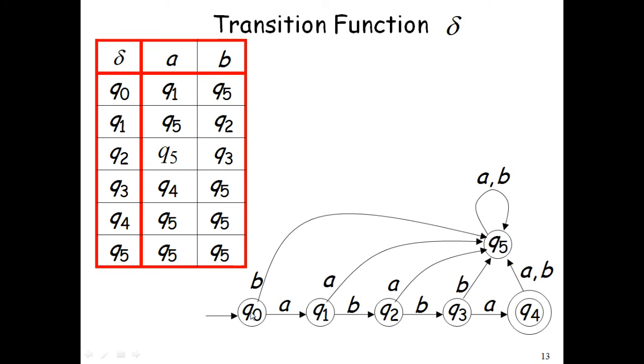So q0 comma a, it is moving to q1, so the output is state q1. Q0 comma b is moving to q5, so the output is q5. Q1 a is q5. Q1 b is q2. Q2 a is q5. Q2 b is q3. Q3 a is q4, which is an accepting state. Q3 b is q5. Q4 a is q5. Q4 b again is q5. Q5 a as well as b is itself the same state, q5. So the closure you can see, or the arrow to the same state, indicates that the state remains in the same state by consuming these symbols that are a and b for state q5.